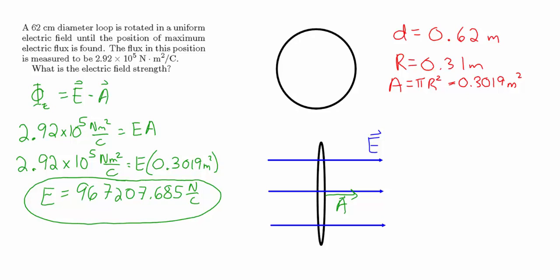This is a very basic problem, just going over the idea of electric flux — that the electric flux is the electric field that passes through an area.